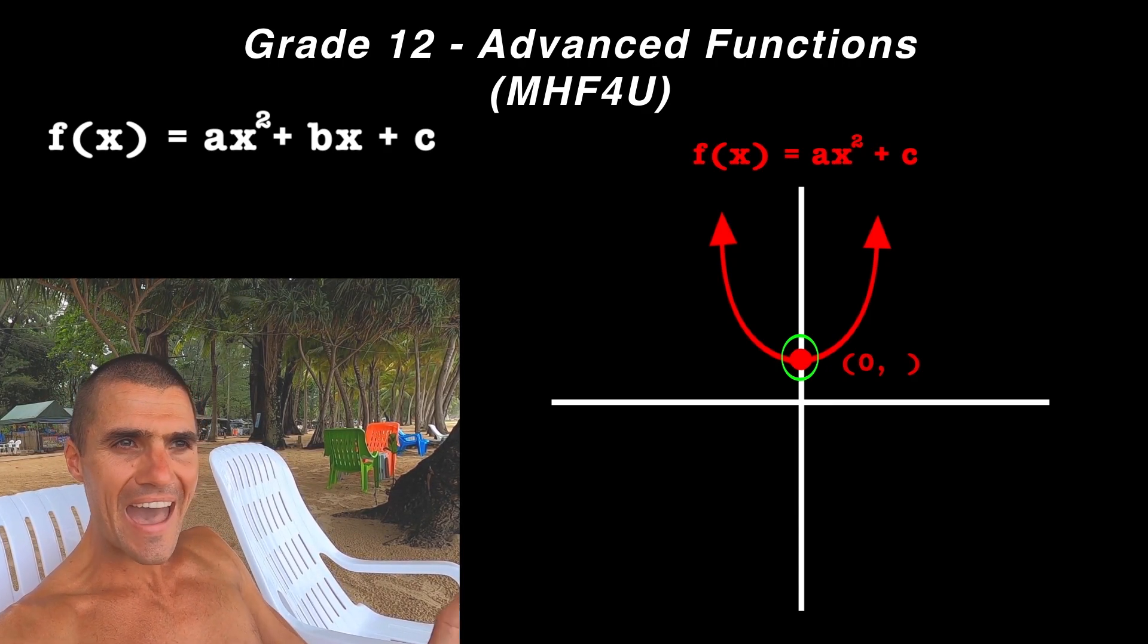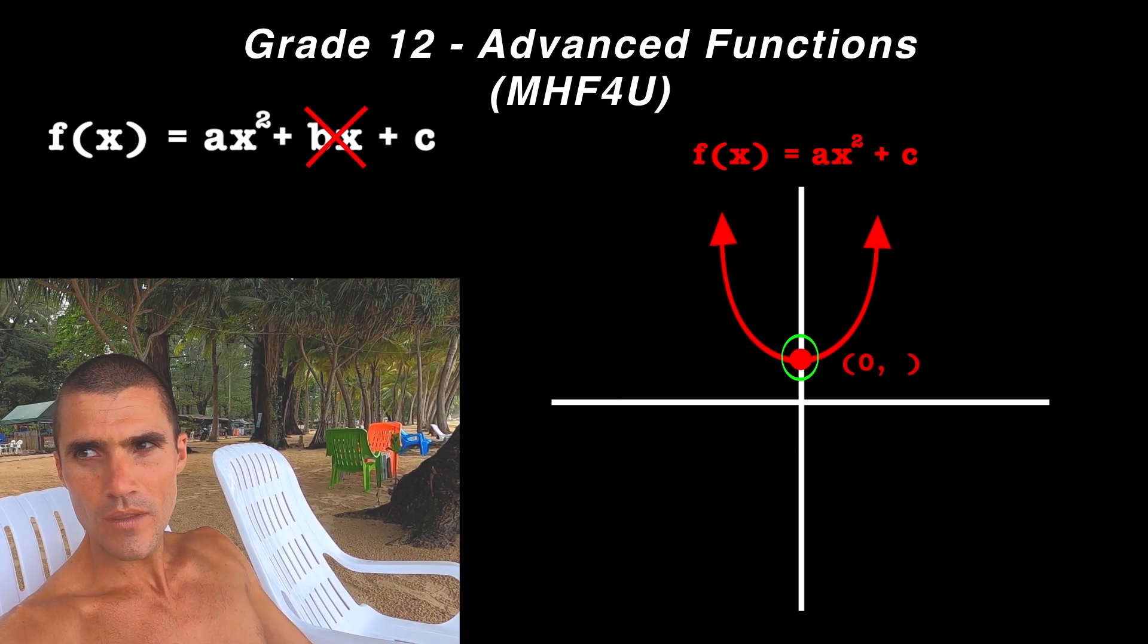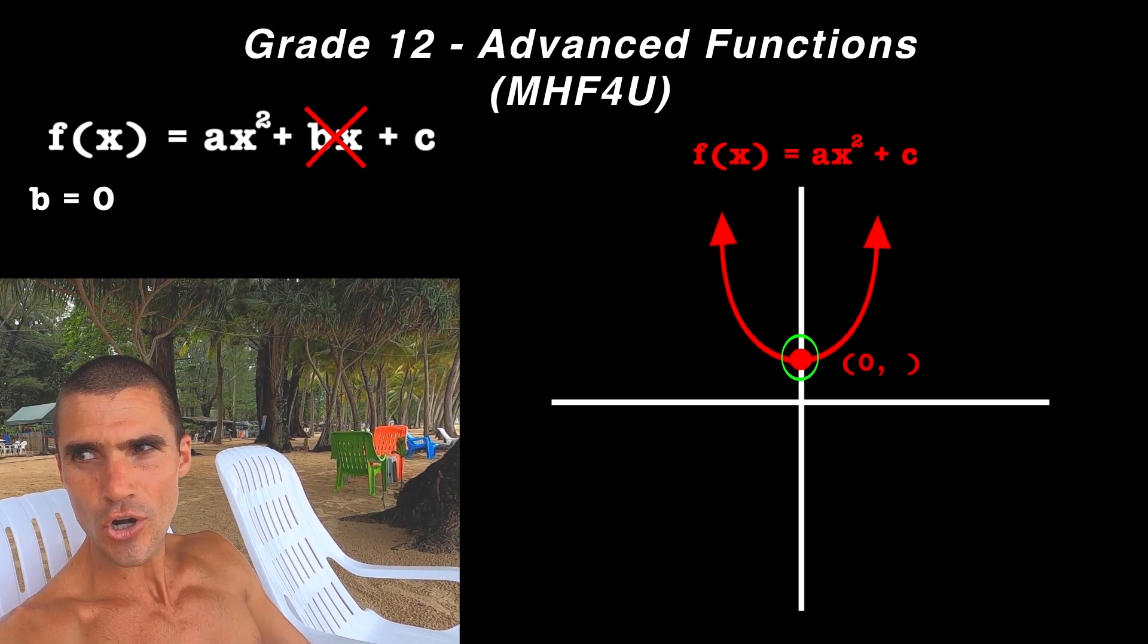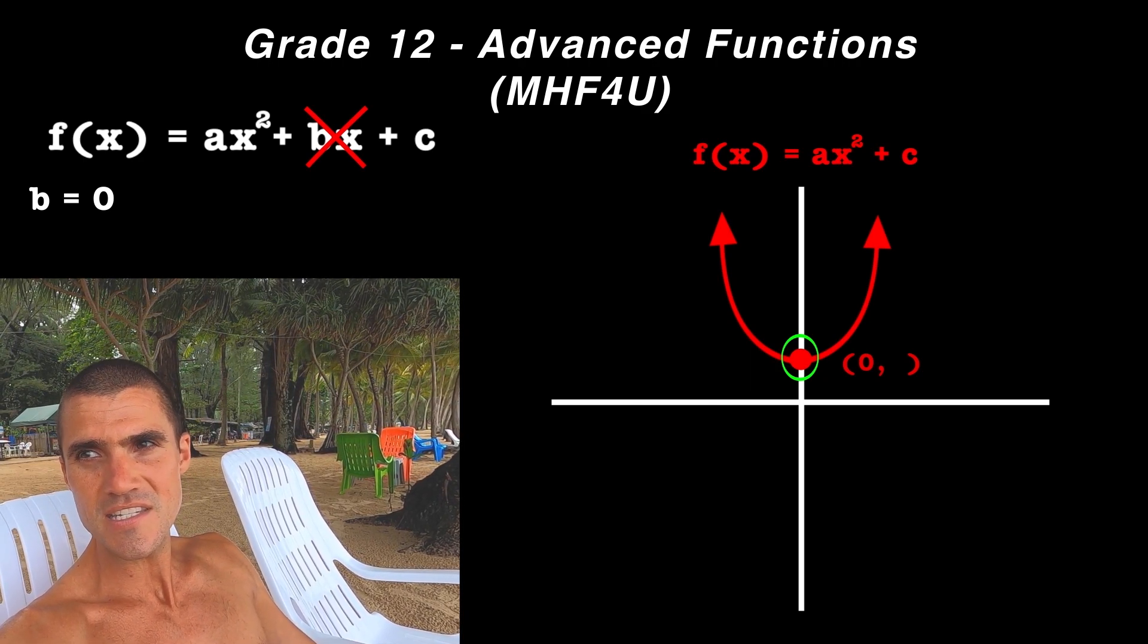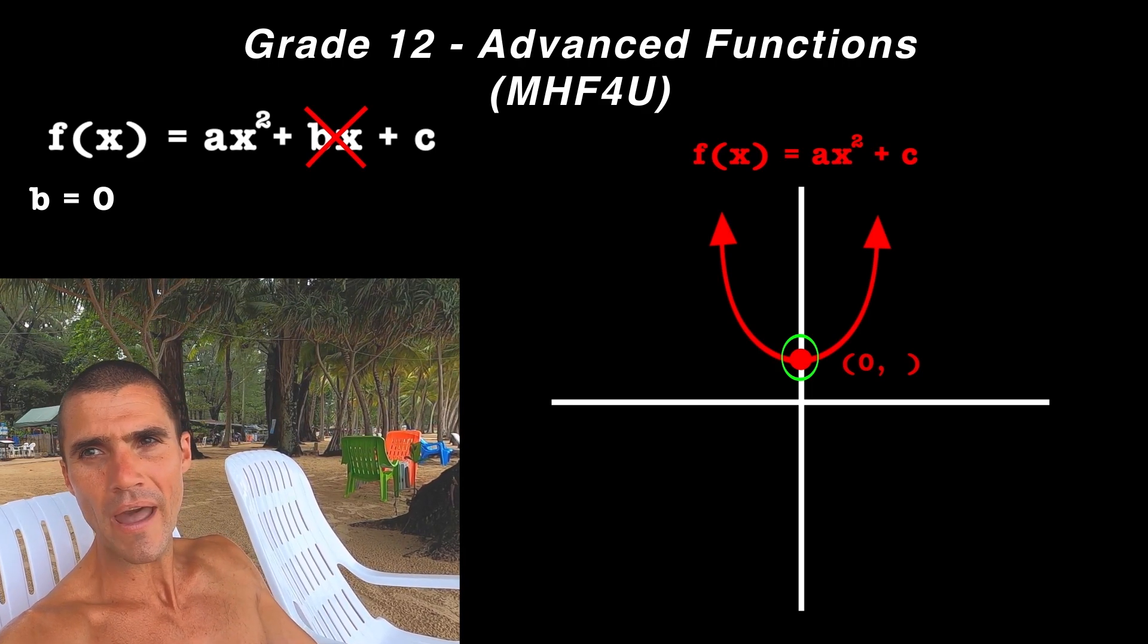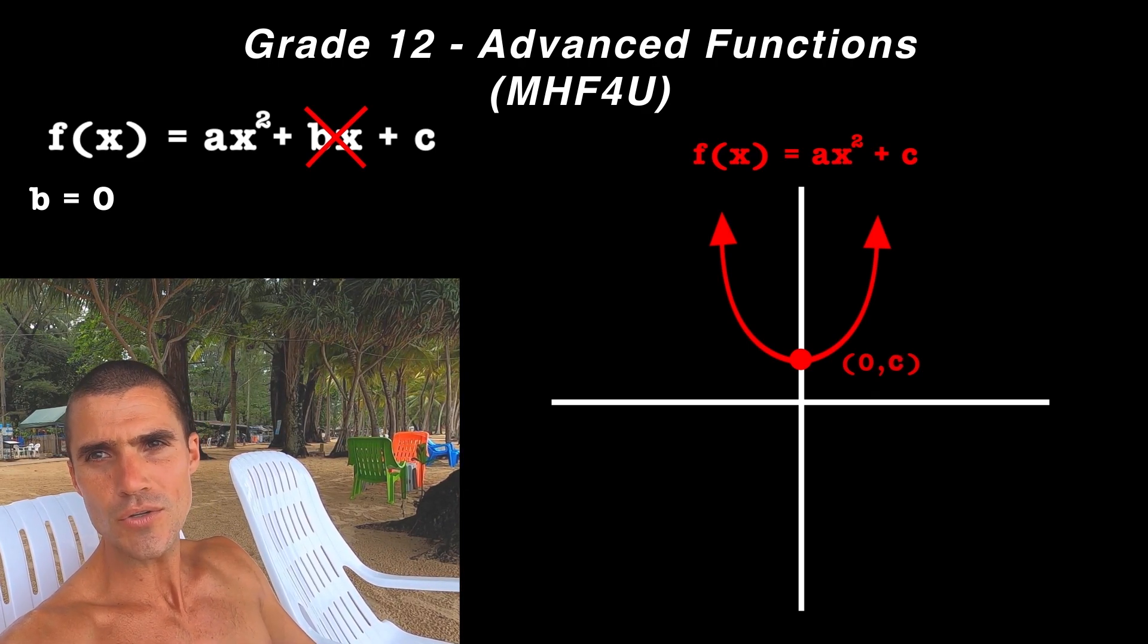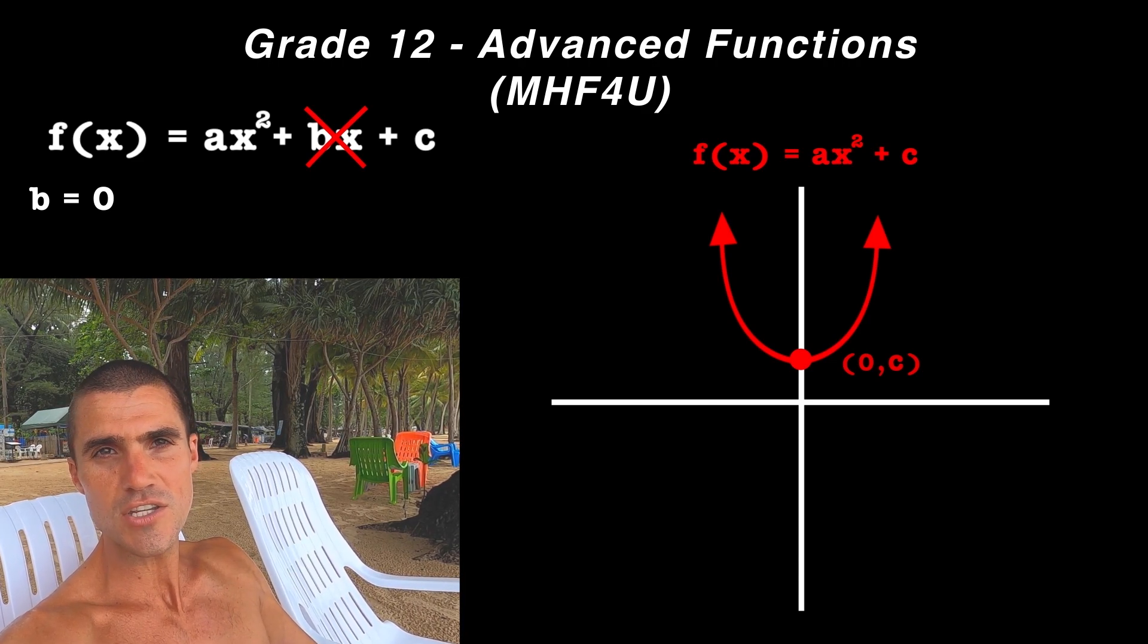And so notice that that bx term is not going to be there. So one of the conditions is that the b value has to be zero, because that would ensure that that middle term is not there and that our quadratic is in that ax² + c format. If you have a quadratic in the ax² + c format, the vertex is always going to be at the coordinate (0, c). The c value is going to be the y value of the vertex, and then the x value of the vertex is always going to be zero.